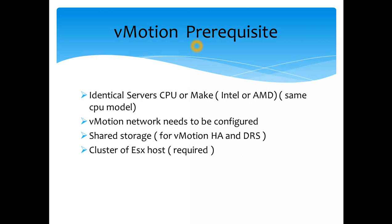Another requirement is that the vMotion network needs to be configured. I've shown you how to enable vMotion using standard switches, and you can also do the same using distributed switches. The next requirement to make sure vMotion works is shared storage. I've provisioned shared storage in my lab using FreeNAS with the iSCSI protocol — there's a session on that. In general, for virtualization, shared networking and storage are needed to be able to move things around.